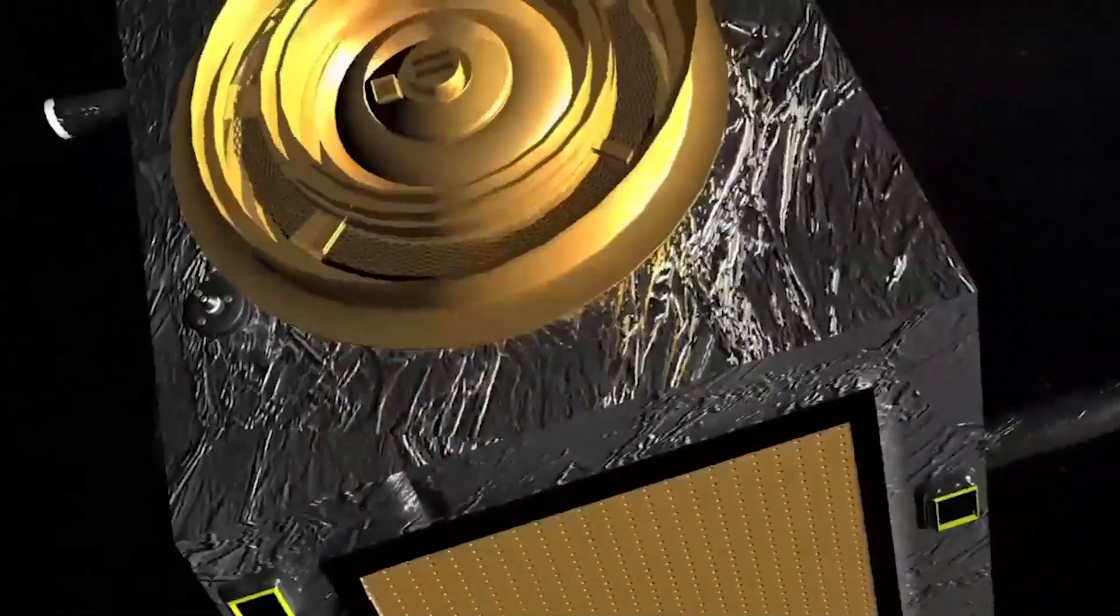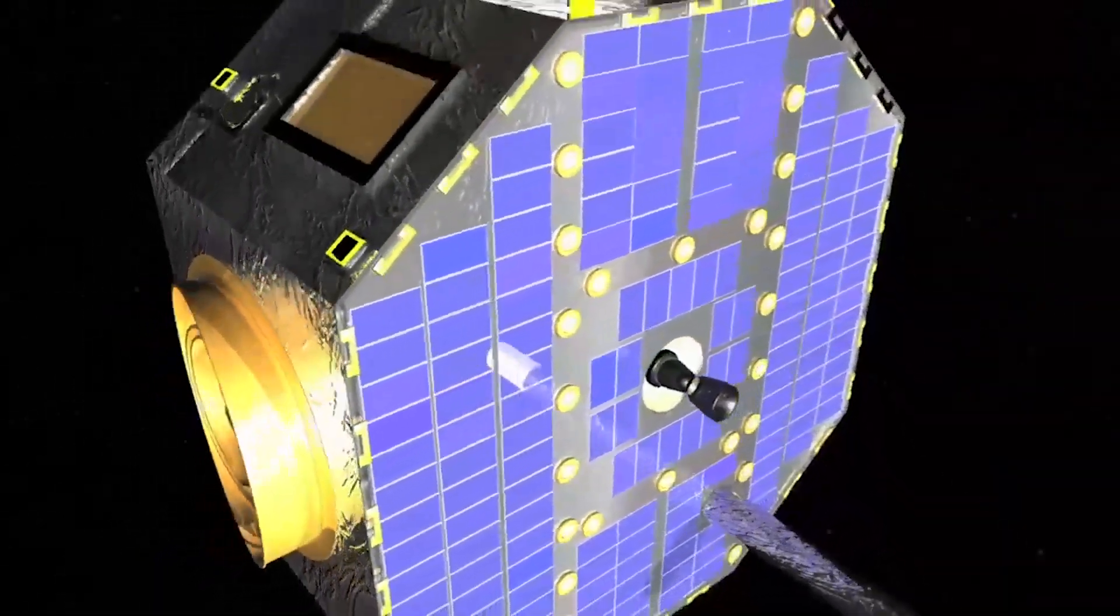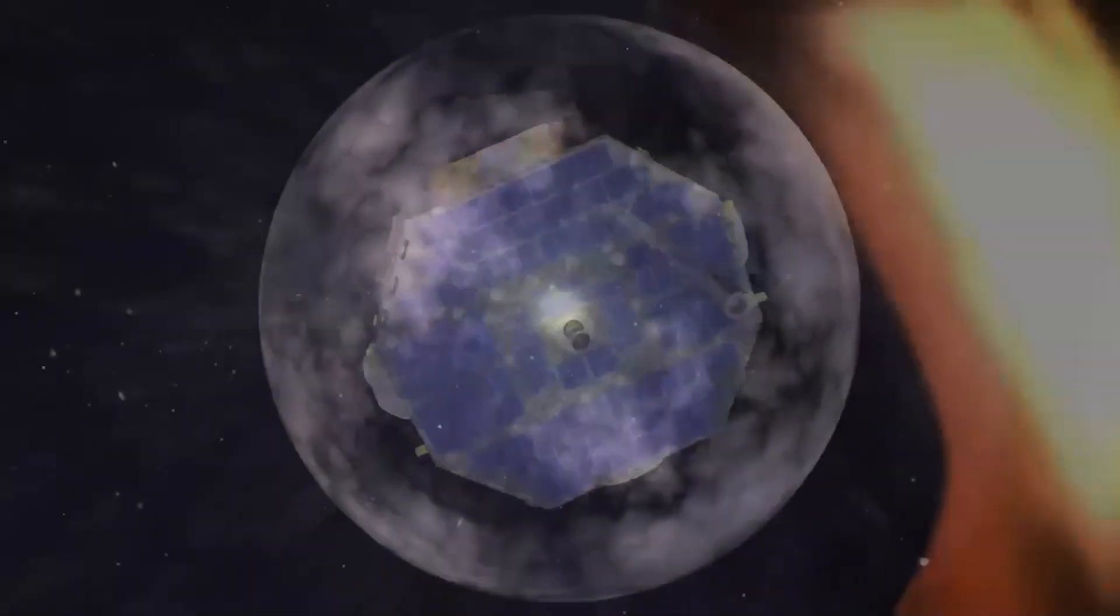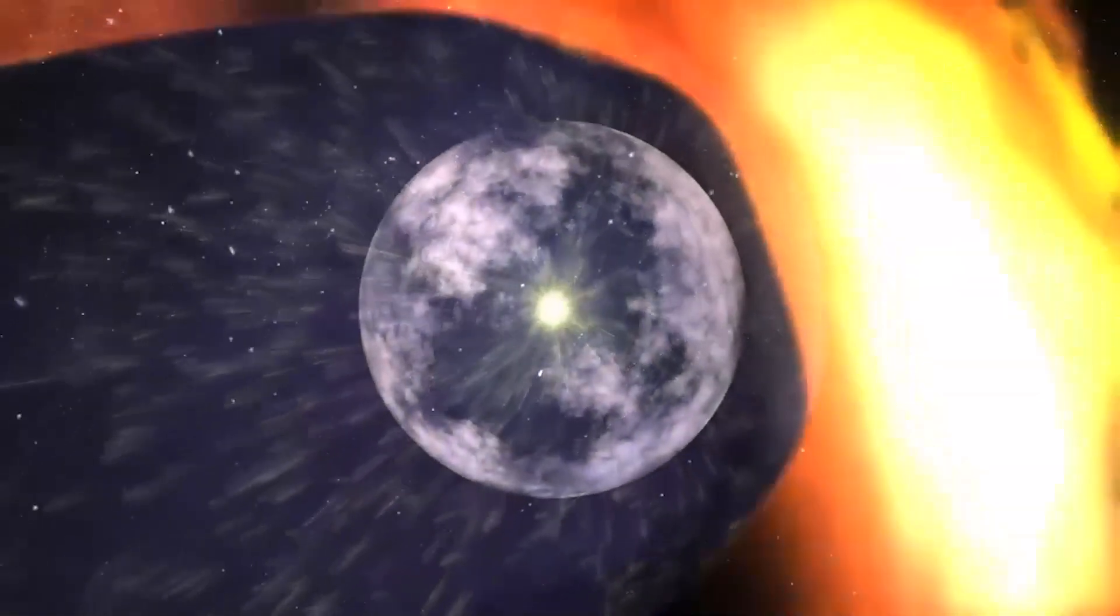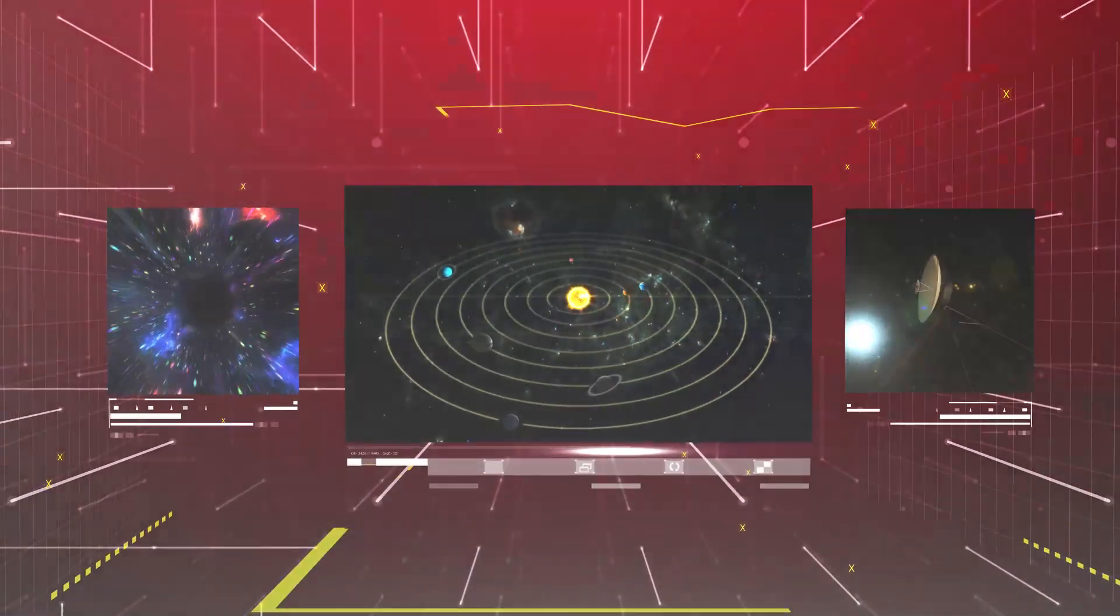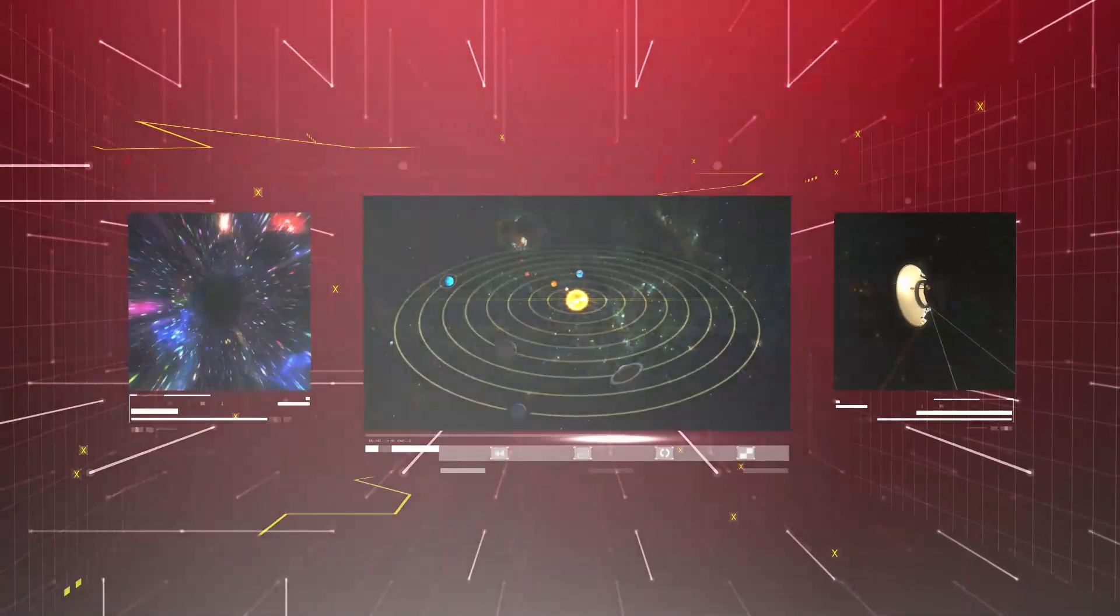These spacecraft have been instrumental in collecting information about the energetic neutral atoms, or ENAs, produced when solar winds collide with the interstellar medium. This data is crucial because it helps scientists understand the interactions at the edge of our solar system.